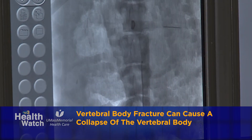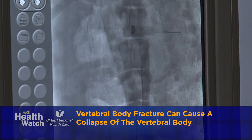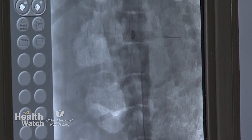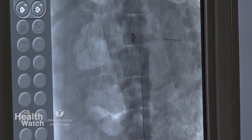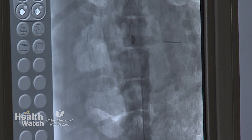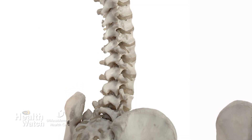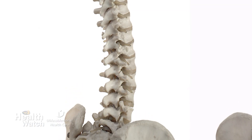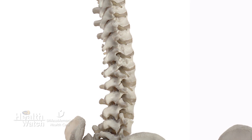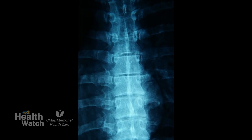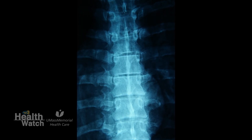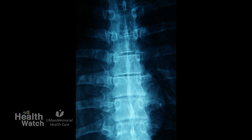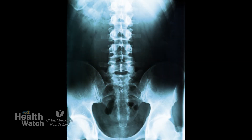The most common cause is osteoporosis. Just to give you an idea of the magnitude of the problem: 1.5 million fractures related to osteoporosis happen every year in the US. The most common cause immediately after osteoporosis is a neoplastic process — this means a cancer that unfortunately affects the spine and generates a collapse, because the tissue progressively erodes the spine and reduces the resistance of the bone.